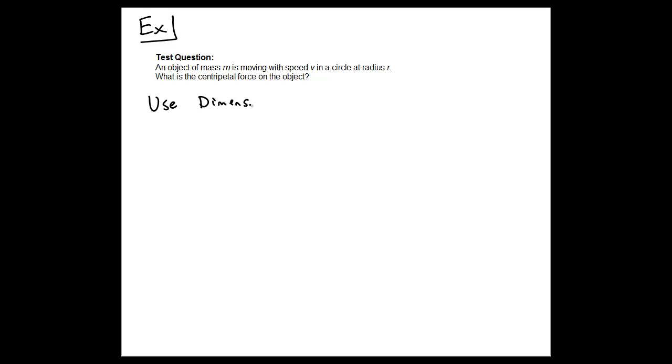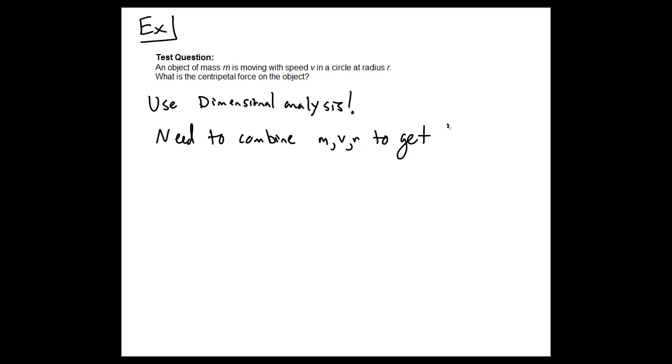Let's consider some examples of using dimensional analysis. For instance, this test question where we have an object of mass m moving with a speed v in a circle of radius r. We want to know what the centripetal force is on the object. What we can do is use dimensional analysis to figure this out — we want to combine the mass, the speed, and the radius to get something with units of force.